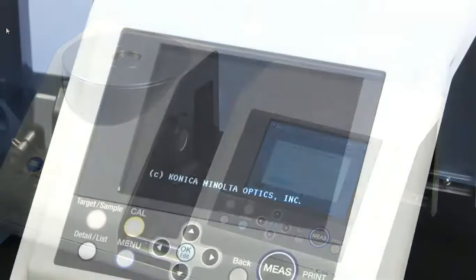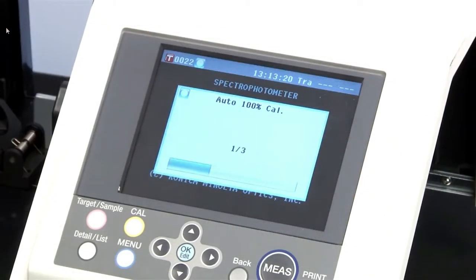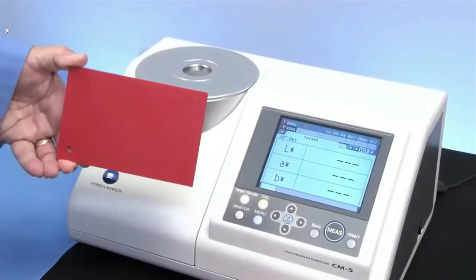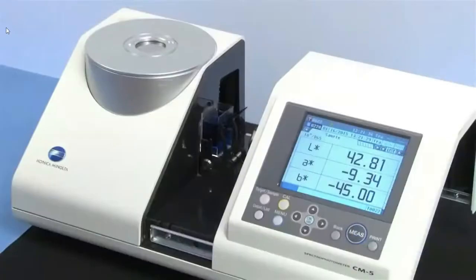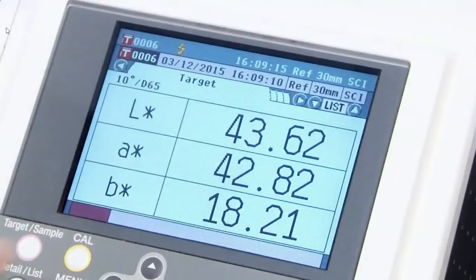Select the transmittance sample holder and press the measurement button. Scroll through a variety of results including Lab color difference, 3D color space, and spectral curve. Quickly switch various modes in reflectance or transmittance.